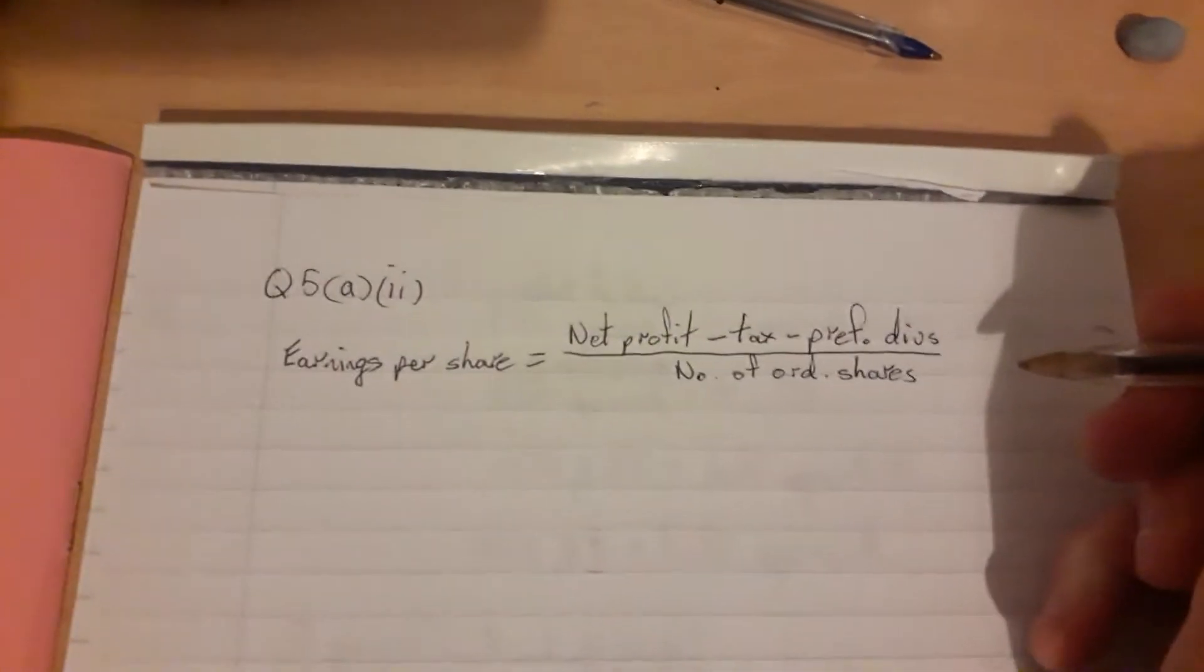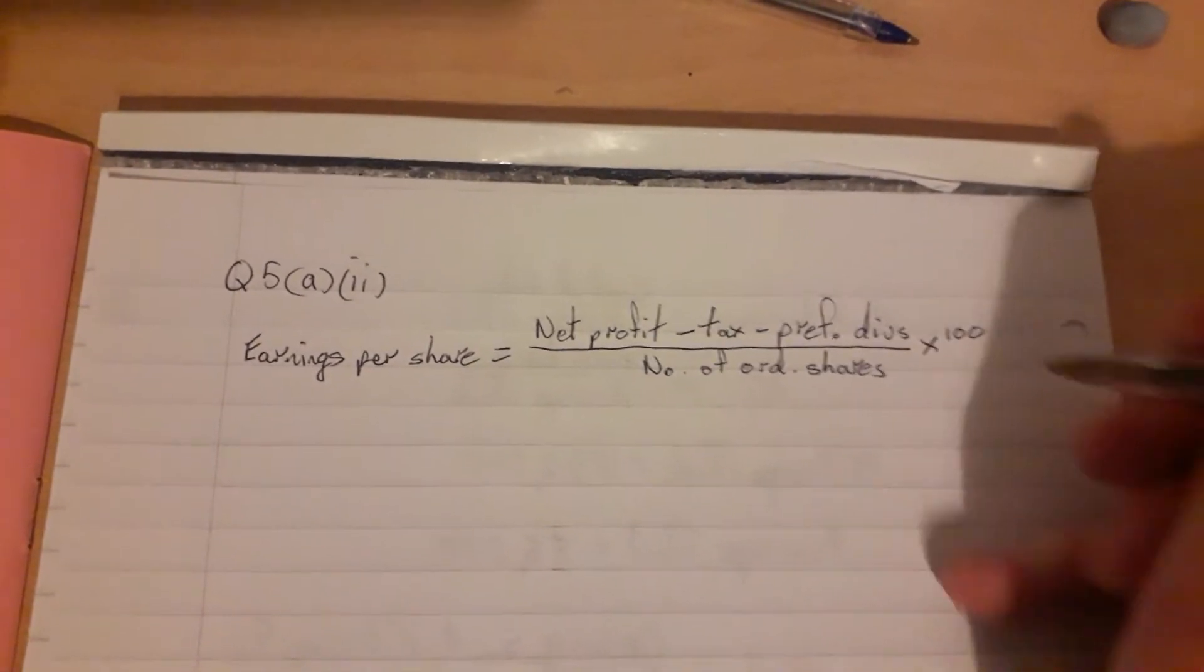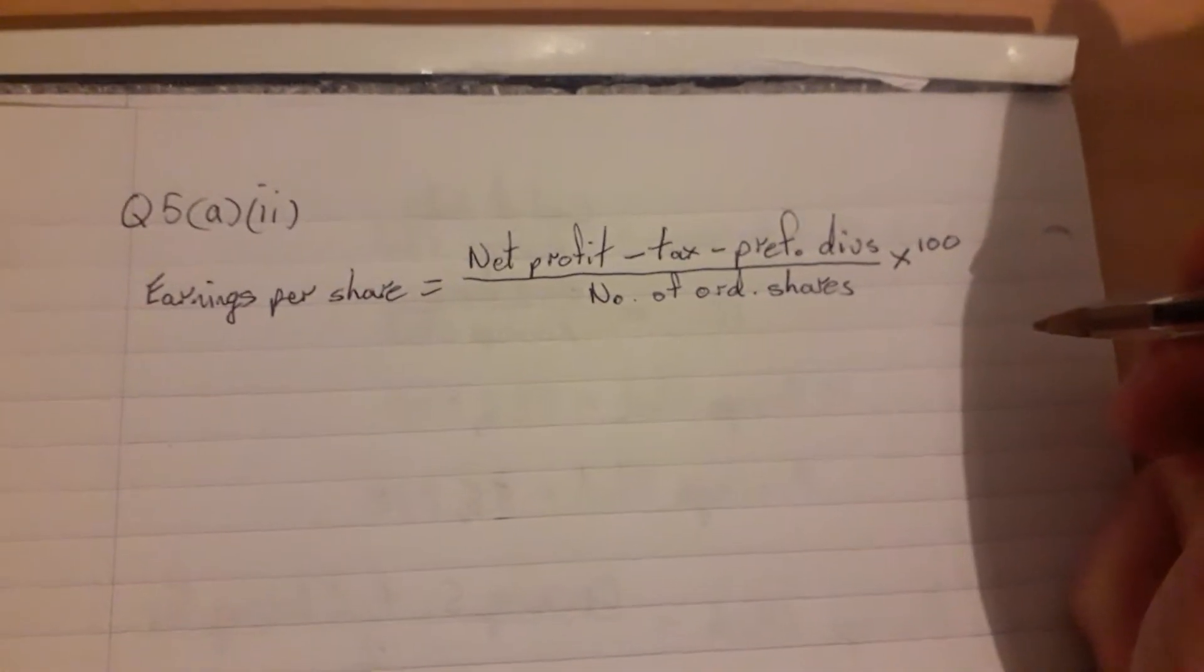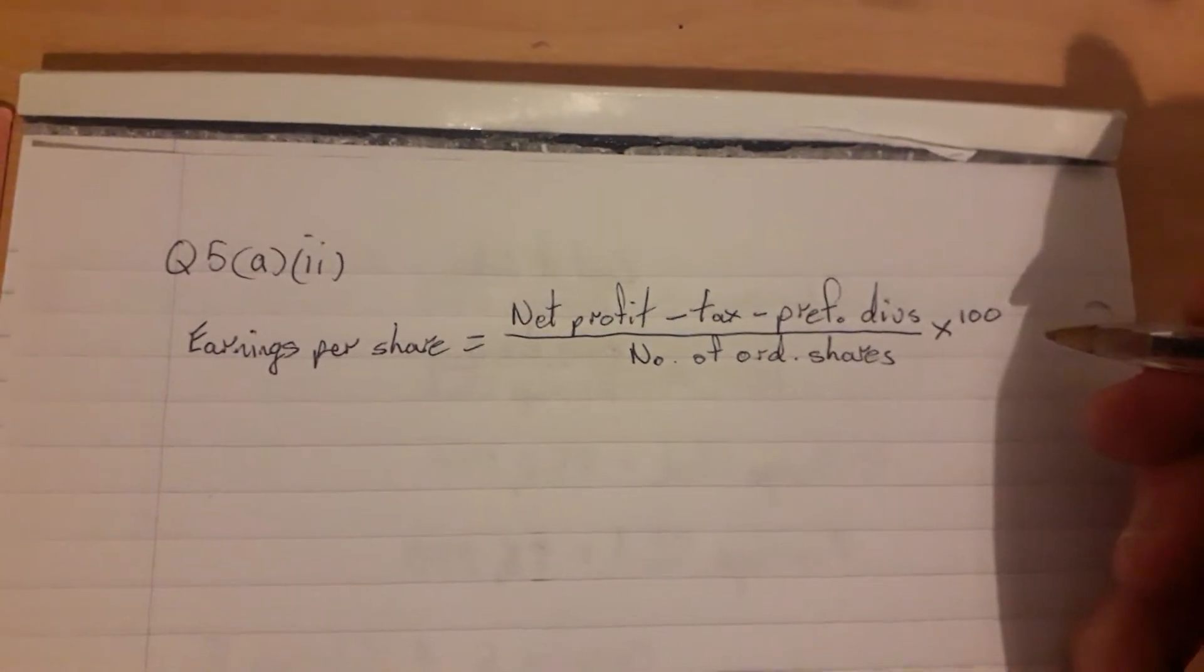Because that would give you an answer in euros, you'd have to multiply it by 100 to give your answer in cent, because the amount is usually pretty small - just like three or four cent per share.